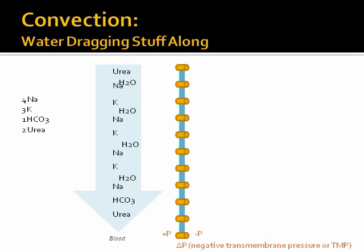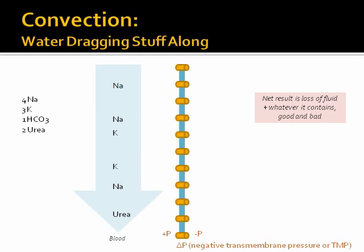In the case of peritoneal dialysis, we use osmotic pressure by putting lots and lots of glucose into the dialysate, which works to pull water out. As water moves across the membrane, it brings other stuff along with it, both the good and the bad, and then gets pulled away. So the net result is loss of fluid and whatever it contains.